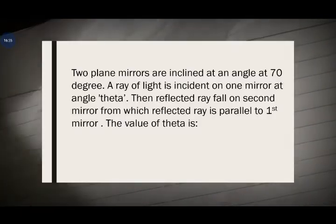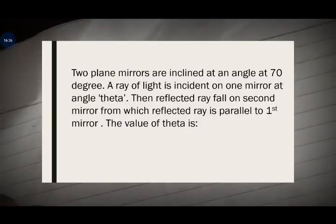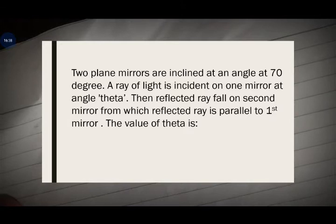A different question: two plane mirrors are inclined at an angle of 70 degrees. A ray of light is incident on one mirror at angle theta. The reflected ray falls on the second mirror, from which the reflected ray is parallel to the first mirror. Find theta.